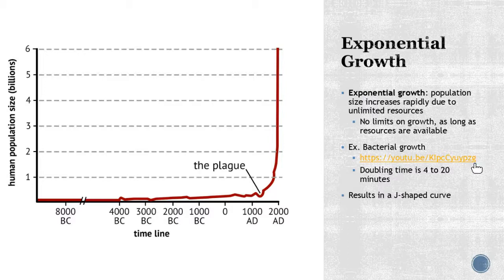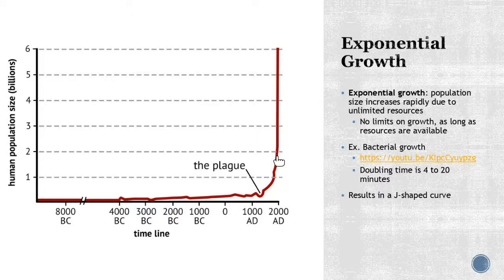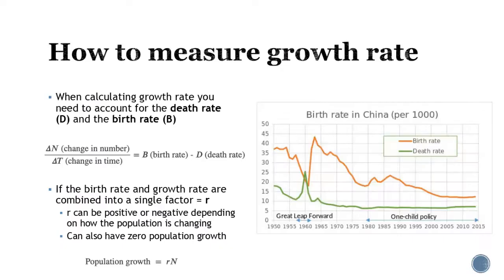Bacterial growth is a good example here. If you remember back to bacteria, this video shows how you can go with a doubling time — a generation within 20 minutes. So if you see this J-shaped curve, that is a good indicator that a population is experiencing exponential growth.